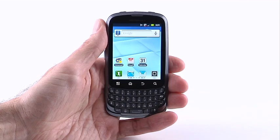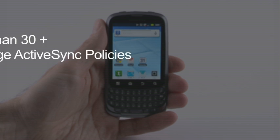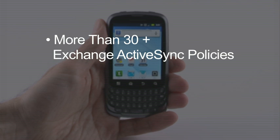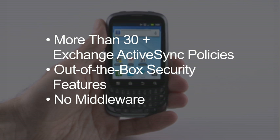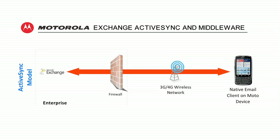The Motorola Admiral offers native support for 30-plus Exchange ActiveSync policies. These are out-of-the-box security features that you can administer on our Motorola business-ready products without any middleware. There are only three components in this solution: the Exchange server, the Sprint network, and the device.